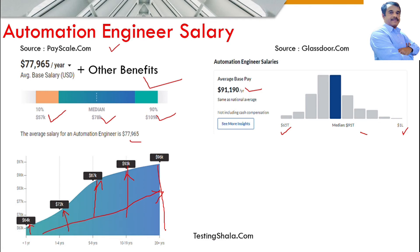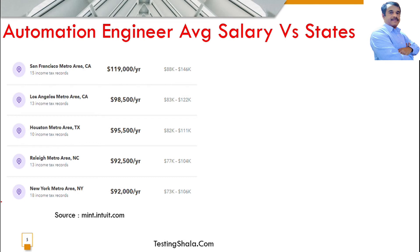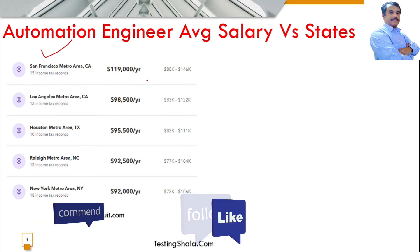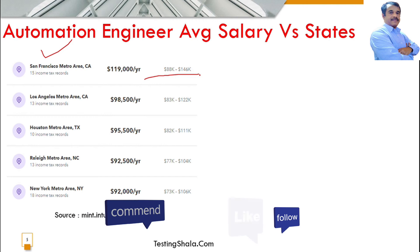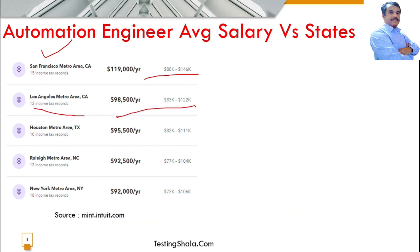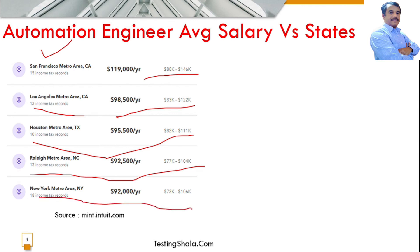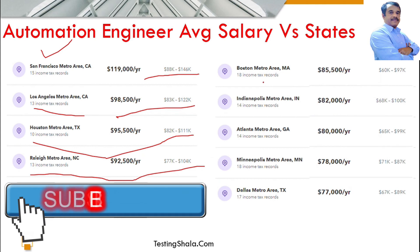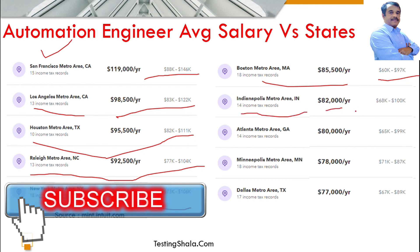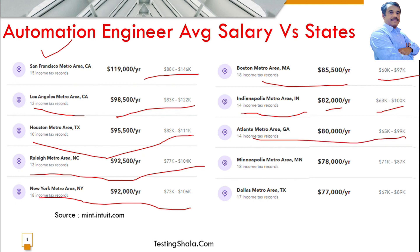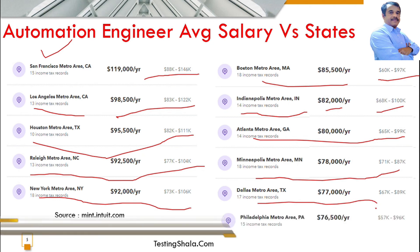These figures may vary by company, as top-notch companies pay more. Looking at average automation engineer salaries across US states: San Francisco averages $119k (range $88k–$146k), Los Angeles, Austin, Raleigh, New York, Boston at $85k (range $60k–$97k), Indianapolis at $82k, Atlanta, Minneapolis, Dallas, and Philadelphia also have their respective averages shown.